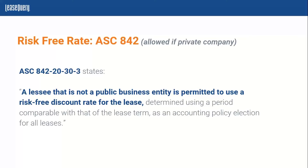In terms of the risk-free rate, the guidance under ASC 842, in paragraph section 20, paragraph 30, states that a lessee that is not a public entity is permitted to use a risk-free discount rate for the lease, determined using a period comparable with that of the lease term, as an accounting policy election for all leases. Essentially, the risk-free rate can be defined as the rate of return for an investment that is essentially risk-free.